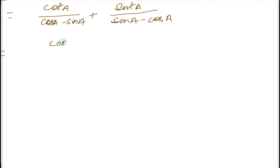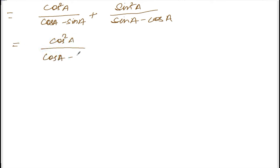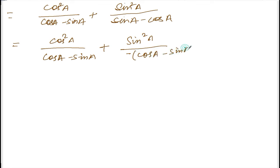Wait — I can see a problem here. We have cos squared(a) divided by cos(a) minus sin(a), and sin squared(a) divided by sin(a) minus cos(a). I can take minus out from sin(a) minus cos(a) to make it minus times cos(a) minus sin(a), so now both fractions have the same denominator.